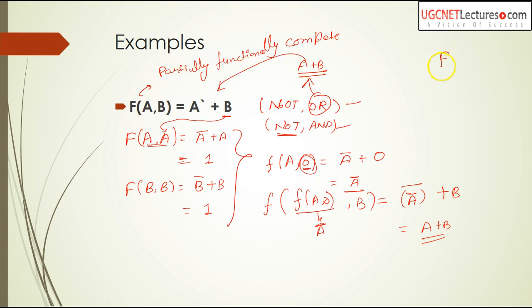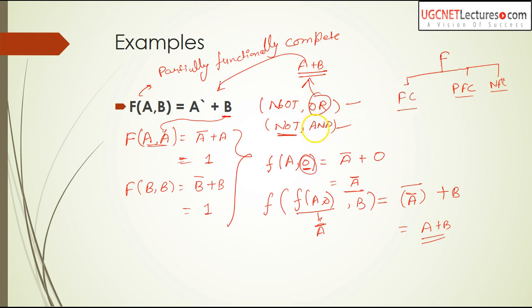A function can be declared in three types: first, functionally complete; second, partially functionally complete; or third, not functionally complete. In our case, F(A,B) = A' + B is partially functionally complete. If you need the support of a constant like 0 or 1, it is partially functionally complete. If you cannot find NOT or AND/OR operations even with the help of constants, then the function is not functionally complete.